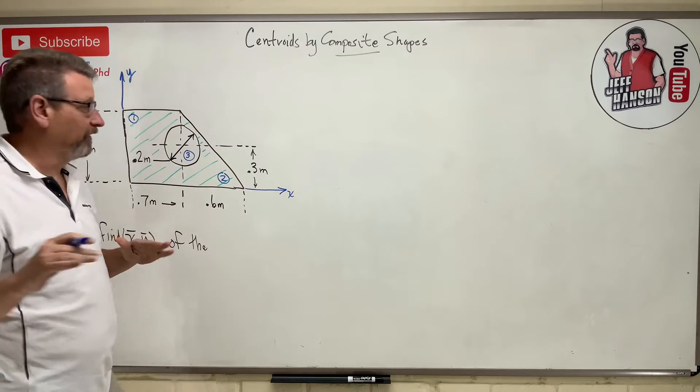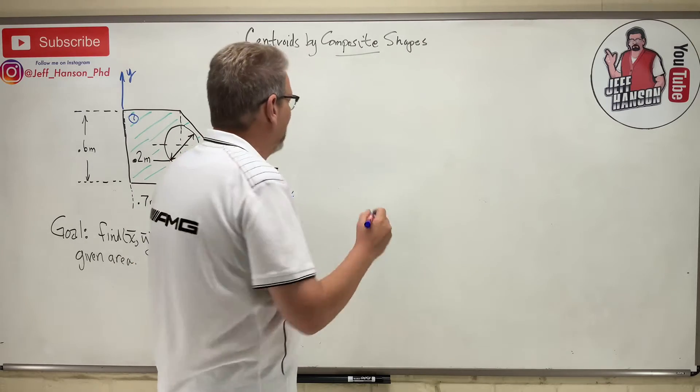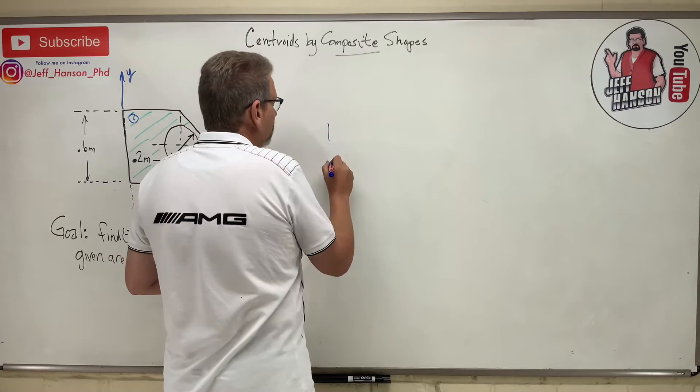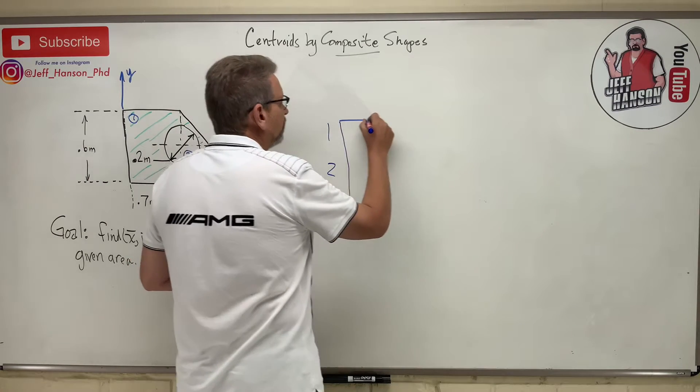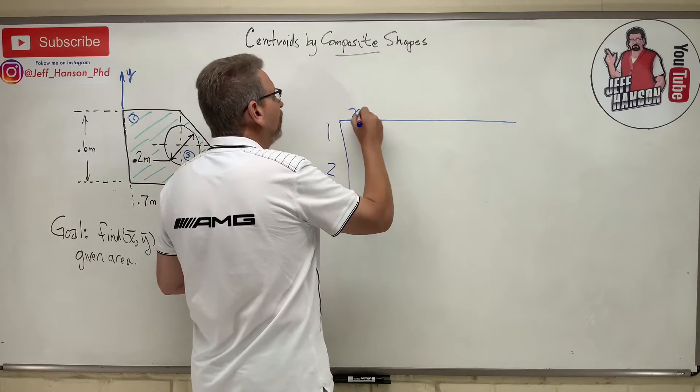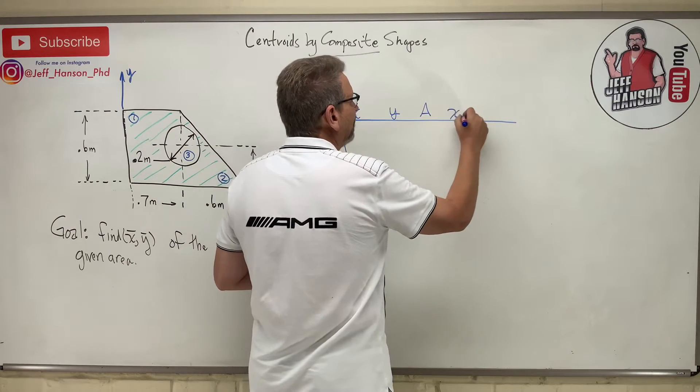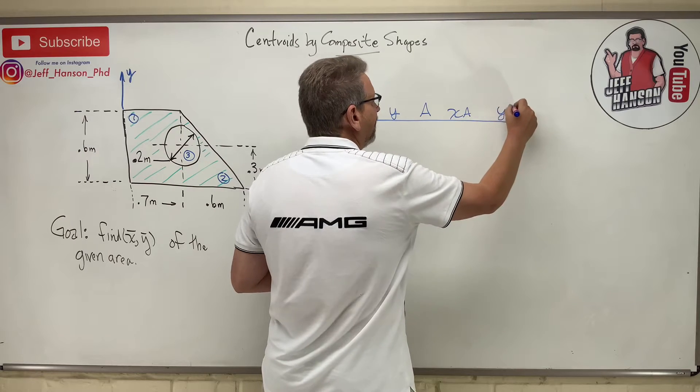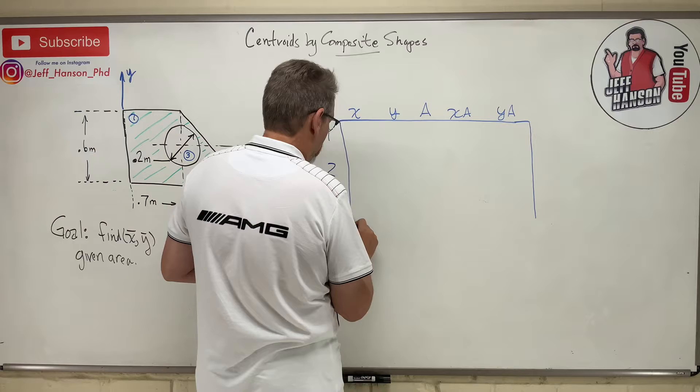You know what, I am a fan of the table method from now on for centroid. If you're doing composite shapes, the table method is the way to go. Let's do that. So shape one, two, three, and then across the top up here I'm gonna have an X bar, a Y bar, an A, an X·A, and a Y·A.